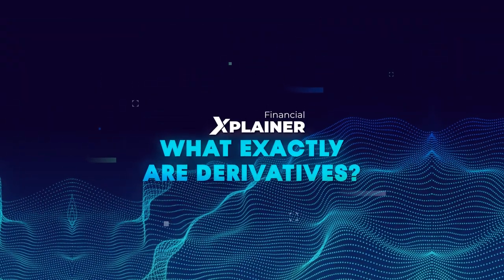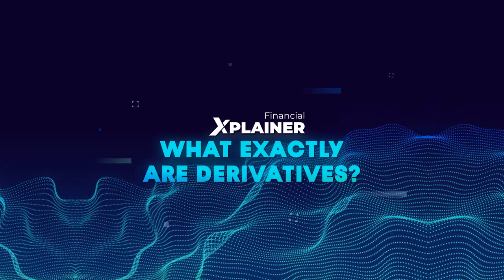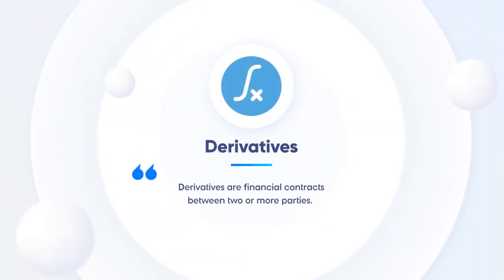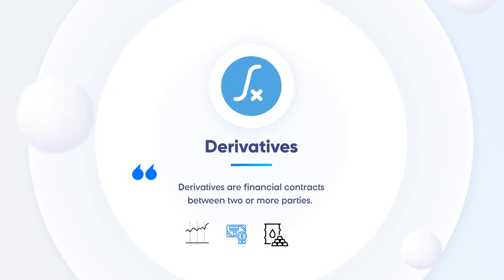What exactly are derivatives? Let's take baby steps. Derivatives are financial contracts between two or more parties. All of them are about some assets — stocks, bonds, commodities, currencies, exchange rates, and some others. Anything that has value and a changing price.